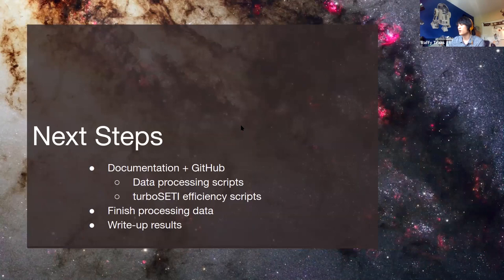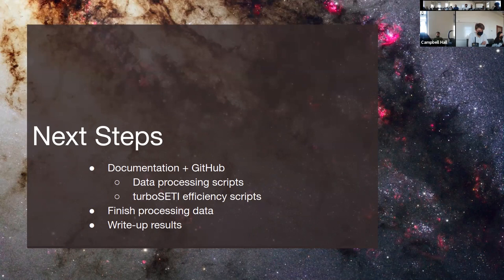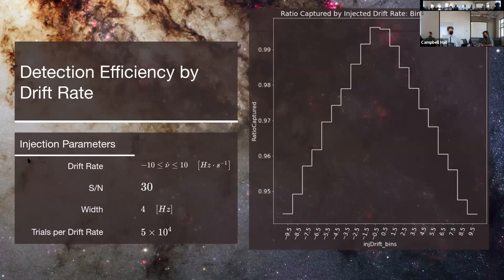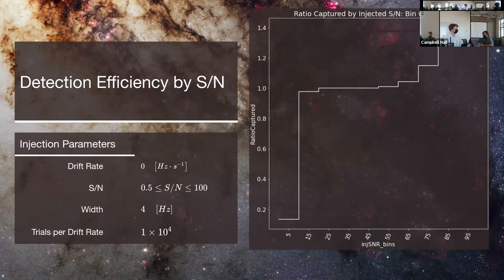Next steps for Raffi include documenting all code for data processing and signal injection, finishing processing the data through turboSETI, storing and organizing results, and writing up the findings. A commenter noted that the strange rising behavior in the SNR plot is likely due to the injection skewing the background noise estimate away from Gaussian, and suggested more robust estimators for the background.